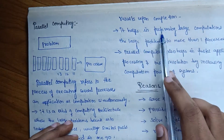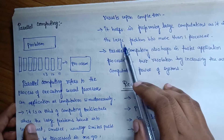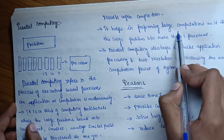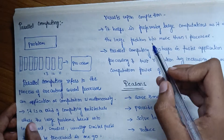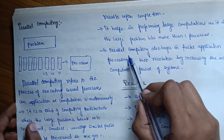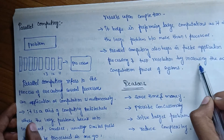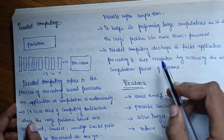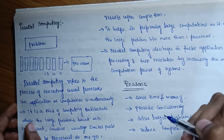Parallel computing divides the large problem between more than one processor. It also helps in faster application processing and task resolution by increasing the availability and computation power of a system.